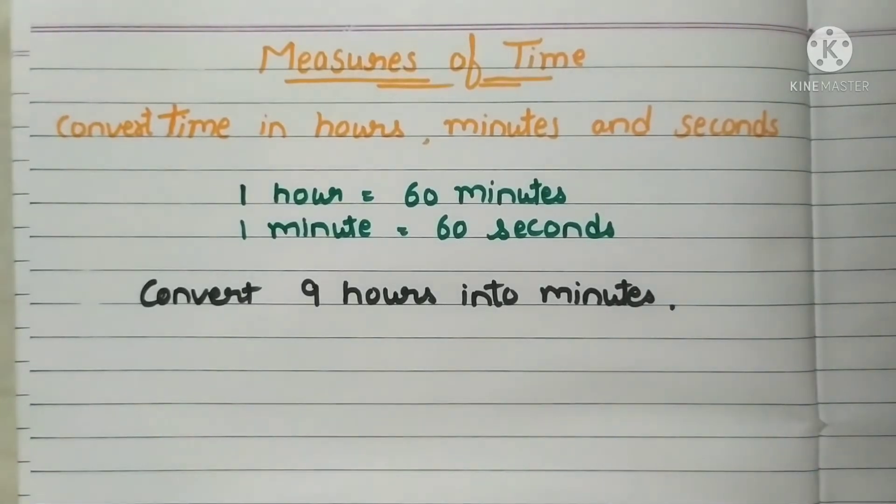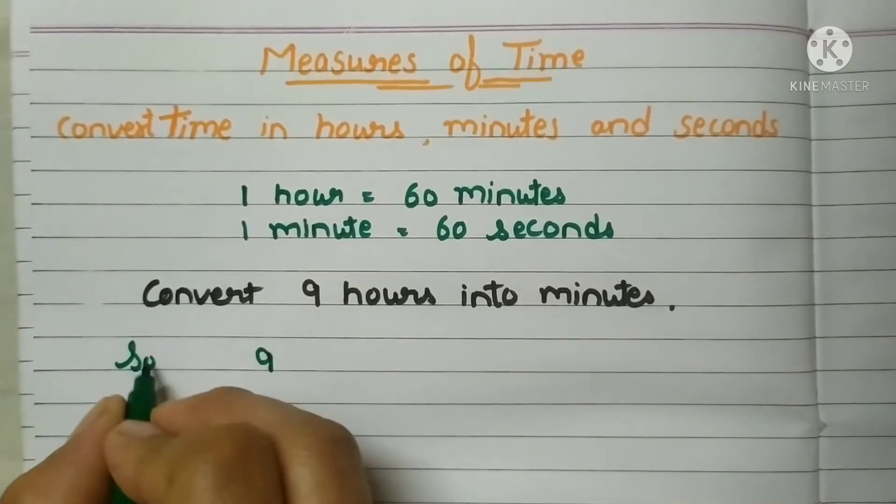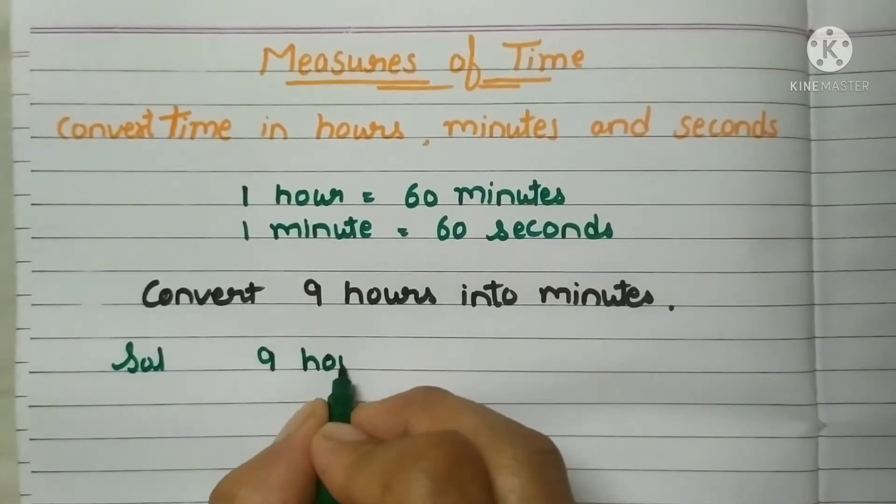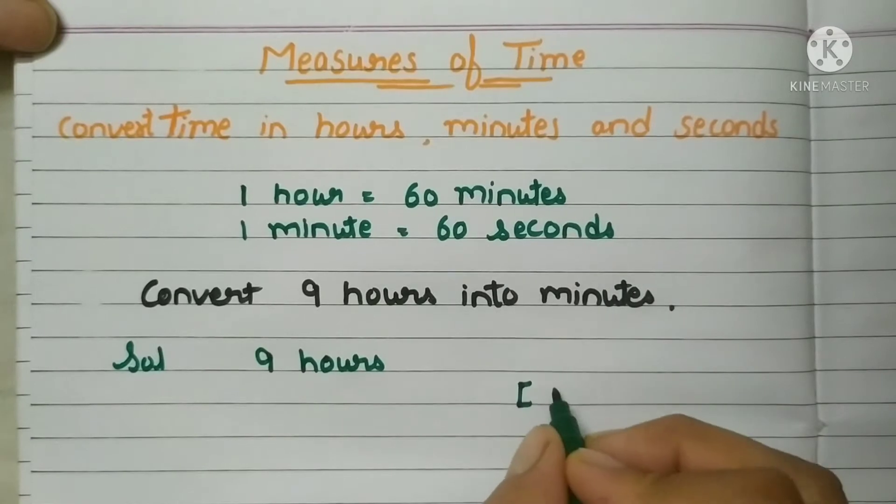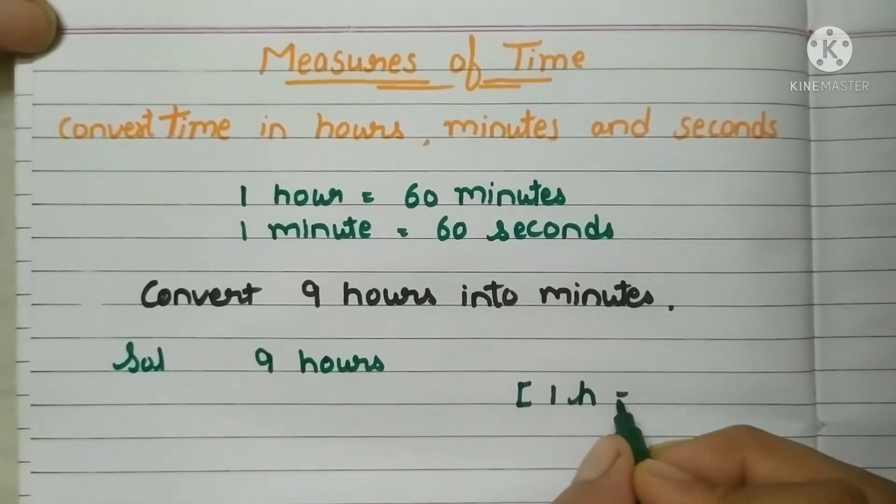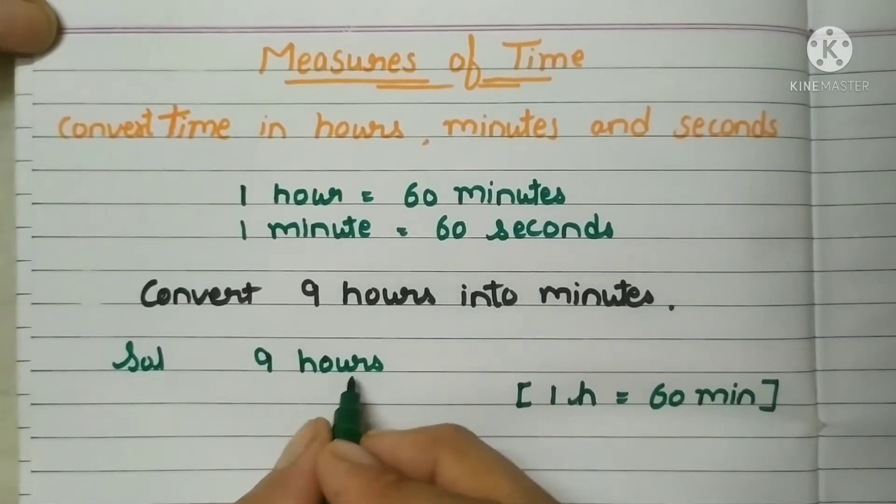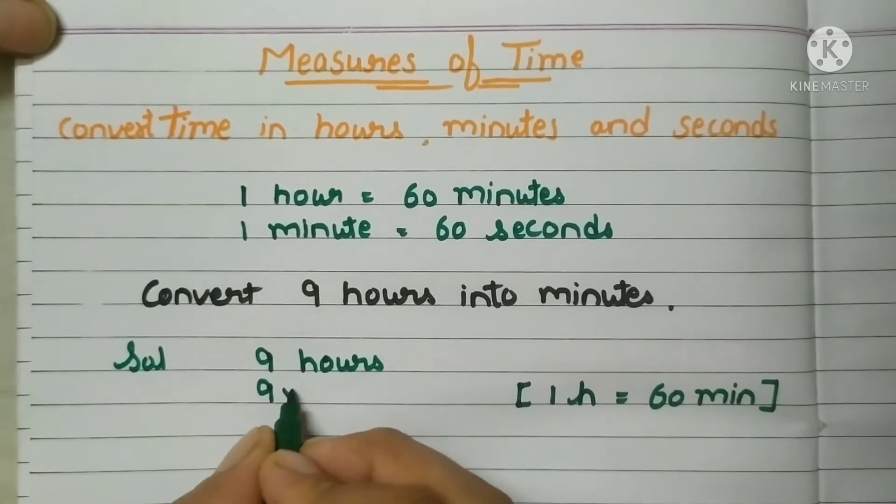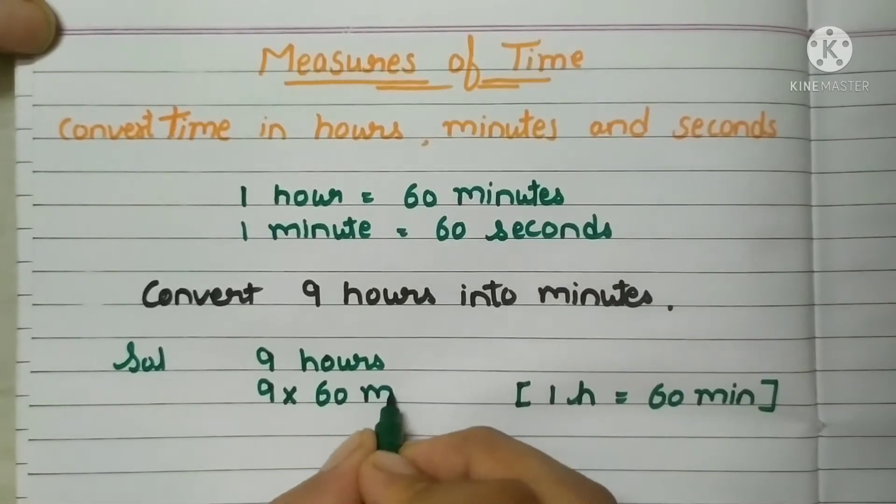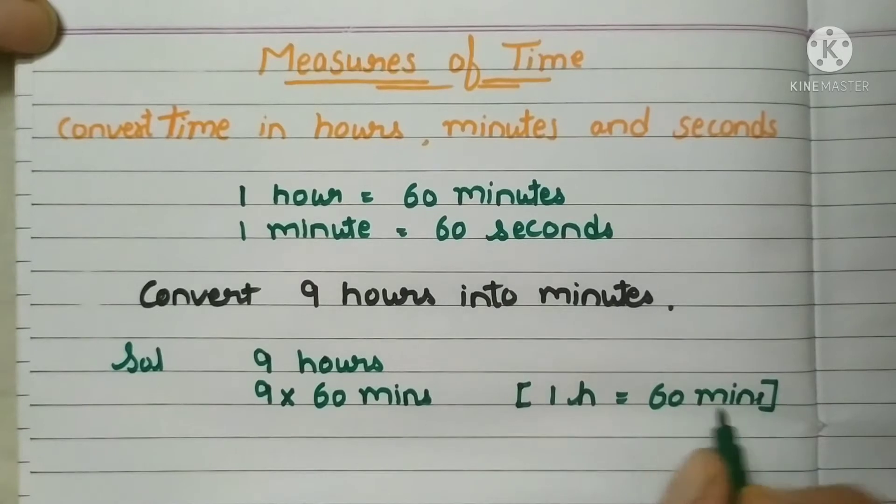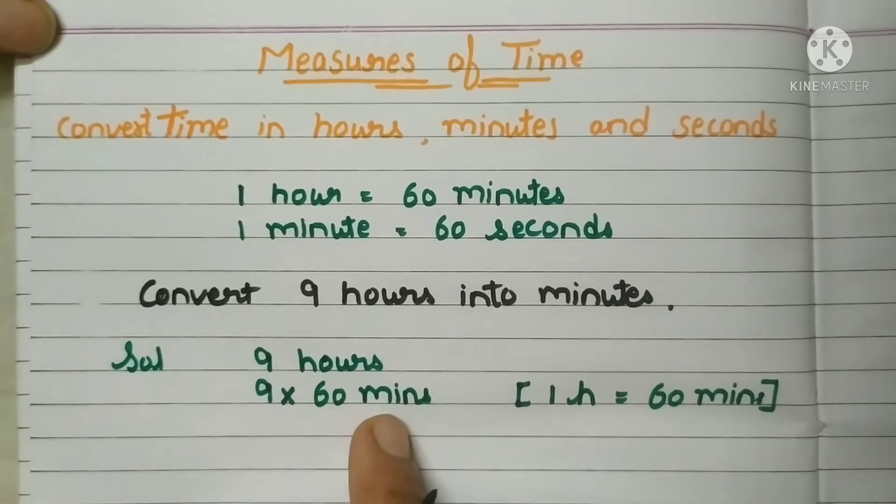So what we have to do? First, we have to write this solution. We will start like this: 9 hours we have, this is our question. Then we will write down the formula that is 1 hour equals to 60 minutes. So instead of this hour what we will write? We will put the sign of multiplication and we will write 60 minutes. Why minutes? Because 1 hour equals to 60 minutes.